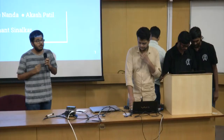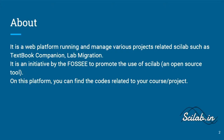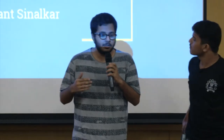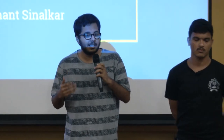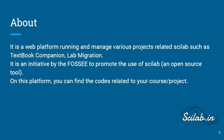The Scilab website has two main features: textbook companion and lab migration. Lab migration proposes to migrate labs of different colleges which use MATLAB and Simulink for their experiments to use FOSS software, mainly Scilab and XCOS. The process is simple — teachers propose their labs with the desired experiments, and open source contributors provide code for the labs.